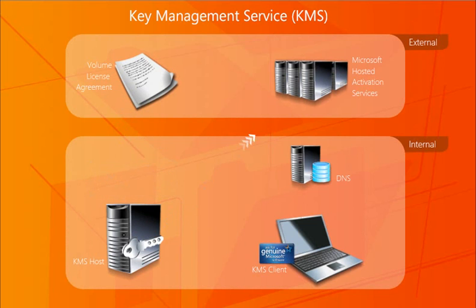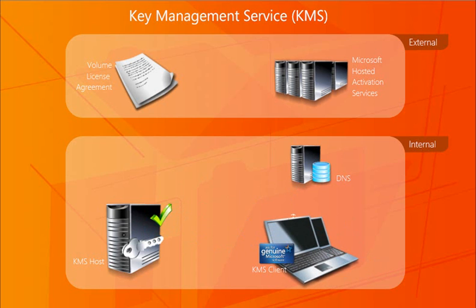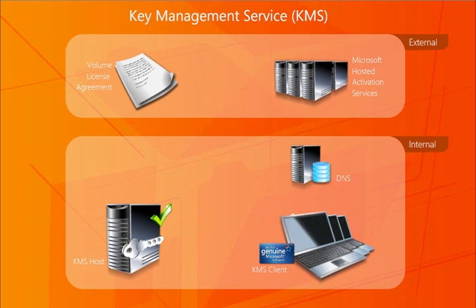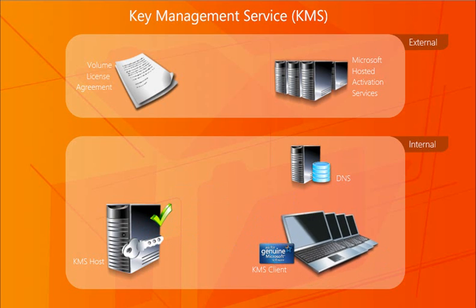The KMS host is activated once the host key is validated with Microsoft. The KMS host automatically publishes its existence on the DNS server. Once the host is set up, KMS clients will automatically look for the KMS host on DNS and activate themselves against the KMS host. Each KMS client then connects to the KMS host to activate. A minimum of five clients need to connect with the KMS host before KMS clients become activated.